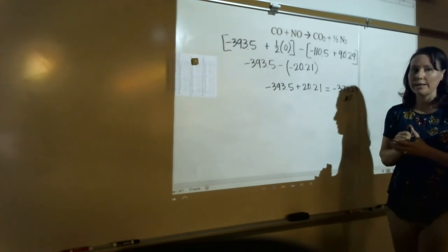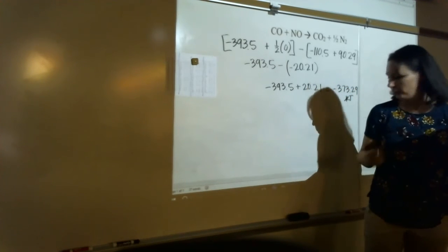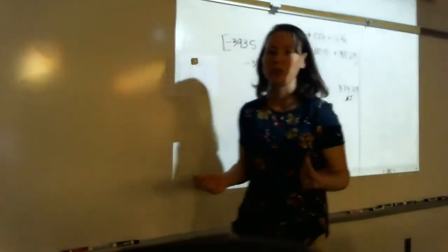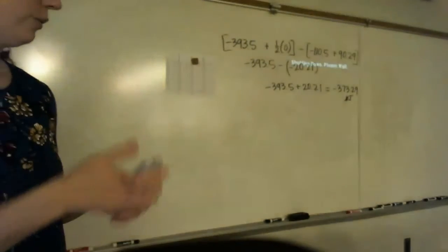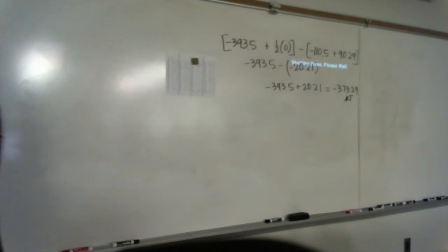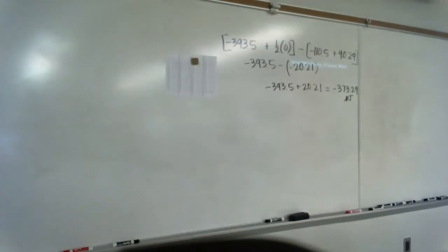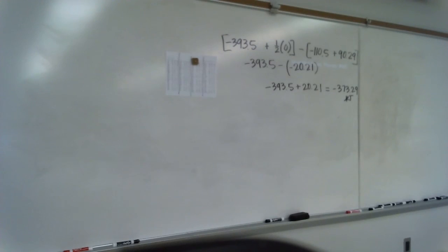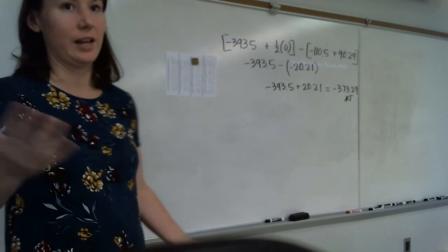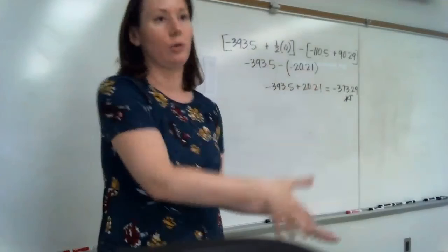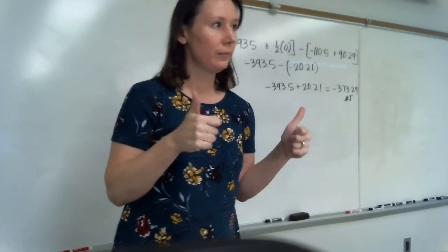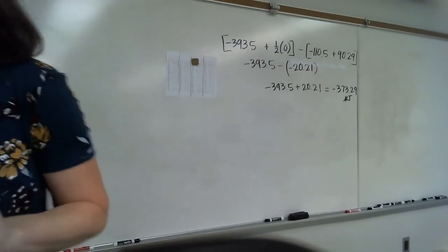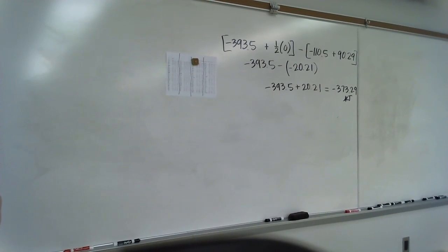Both methods give the same answer. How do you know which one to use? It depends on the information given. If you're given a reaction mechanism — a list of sub-steps — then use Hess's Law. If you're just asked for delta H with no sub-steps provided, look it up in the reference table and use standard heats of formation. That's where we'll stop for today.